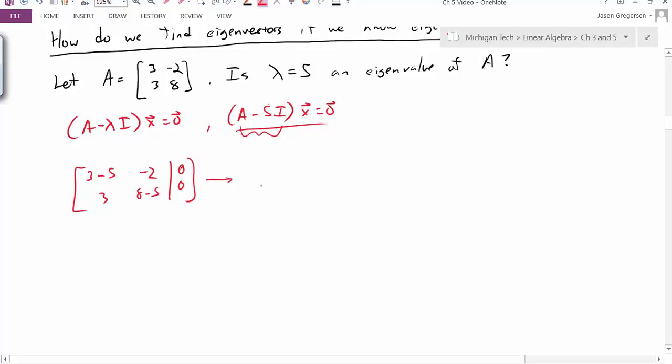So my result in this case is, I have [-2, -2; 3, 3], still augmenting with zero, which I can choose to write or not write. And if I want, I can take that first row and divide by -2. And then if I want, I can take row three minus three times row one. And the end result will be this system.